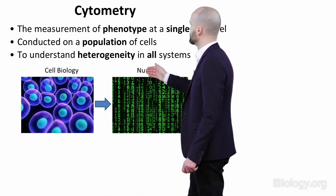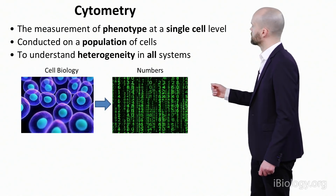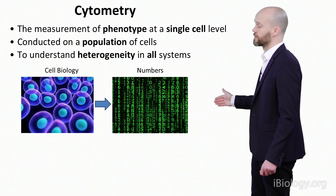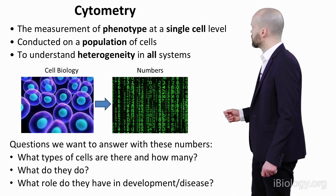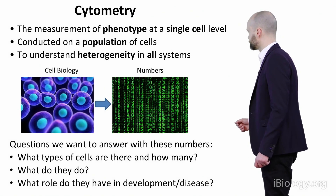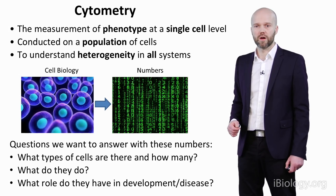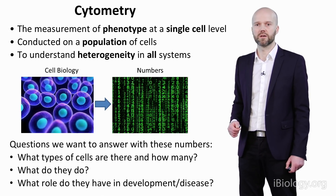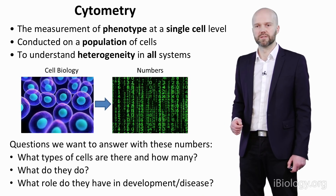Very simply put, we take our cell biology, we perform cytometry, and we generate a set of meaningful numbers. With these numbers, we may ask: what type of cells are within our sample and how many of each phenotype, what they do functionally, and then we may want to put this into context — particularly human development or human disease.